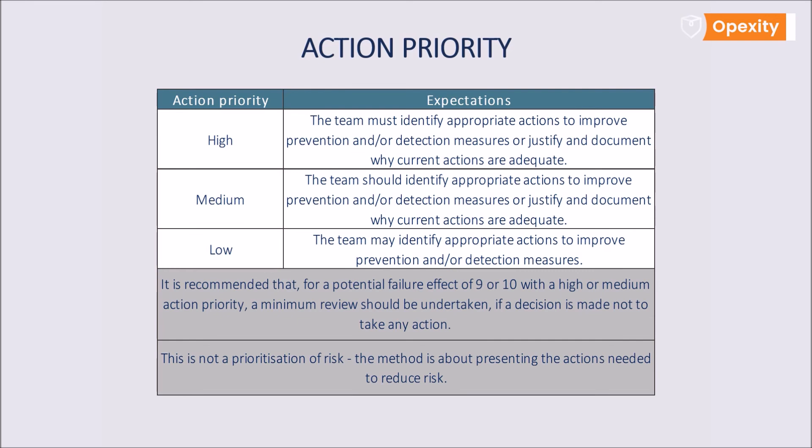A low action priority means that the team may identify appropriate actions to improve prevention and/or detection measures. However, note one thing. The handbook recommends that with a potential failure effect of a severity value of 9 or 10 with a high or medium action priority, we must as a minimum do a review, even if a decision has been made not to take any action.